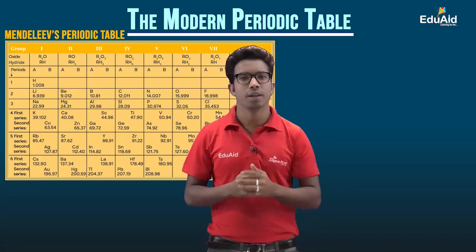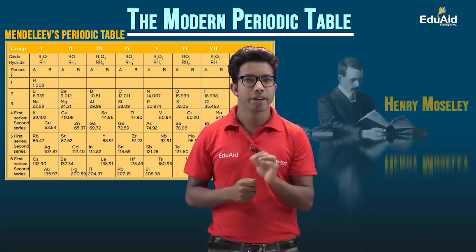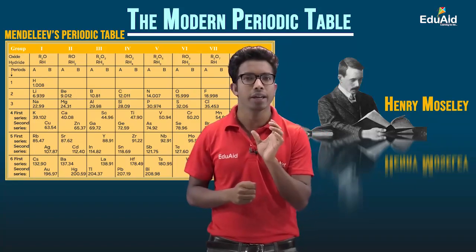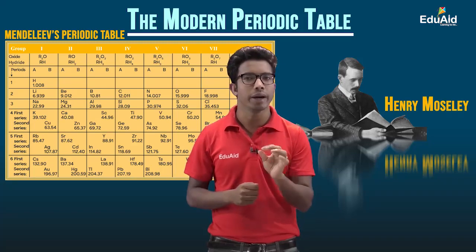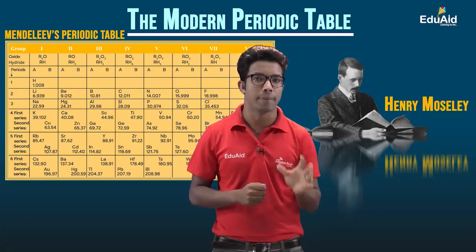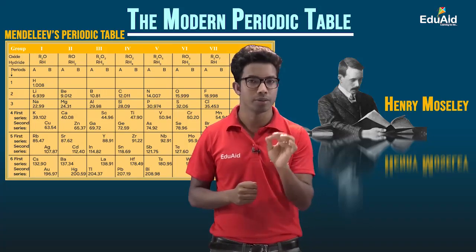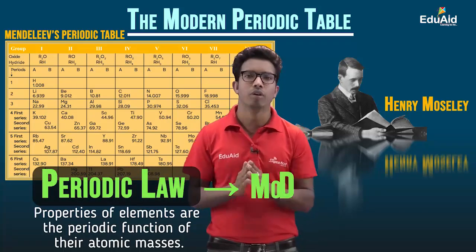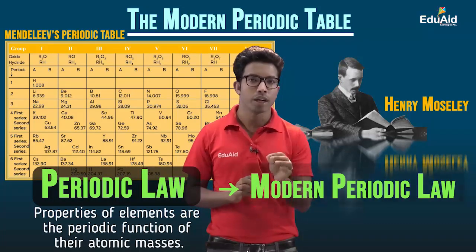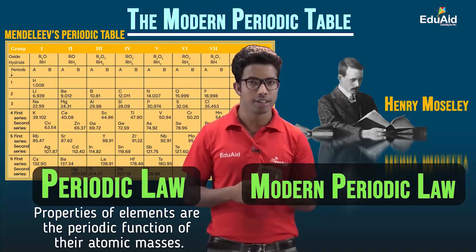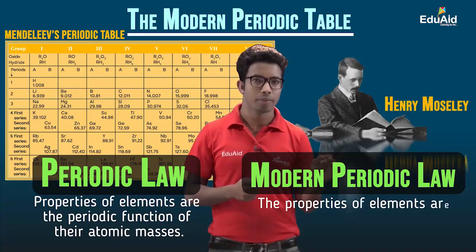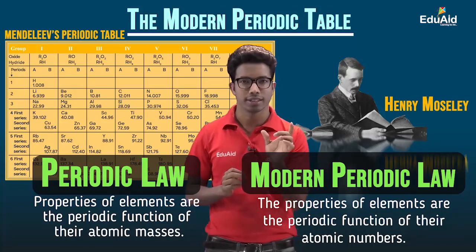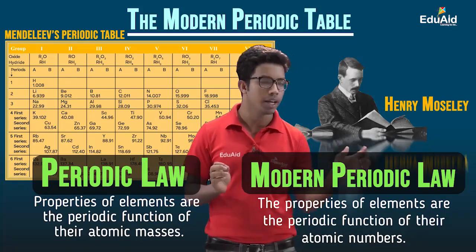To tackle these limitations, a scientist named Henry Mosley, in 1913, said that there is another property — atomic number — which is a more fundamental property of an element than atomic mass. Based on this statement and his proof, the whole periodic law given by Mendeleev was changed to a newer form called the modern periodic law. This modern periodic law states that the properties of an element are a periodic function of the atomic number. The only difference between the two laws is that atomic mass is changed to atomic number.